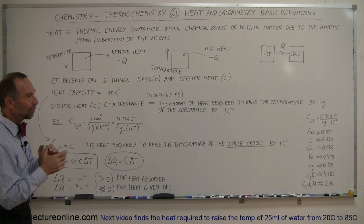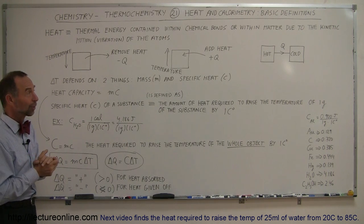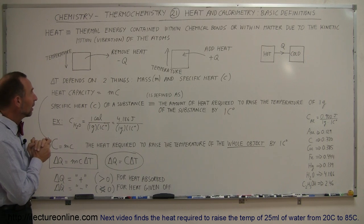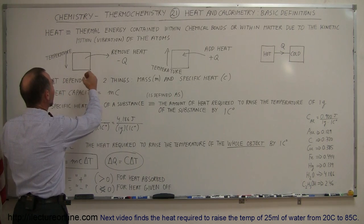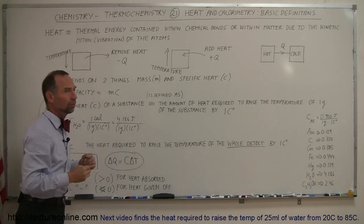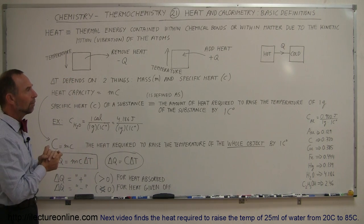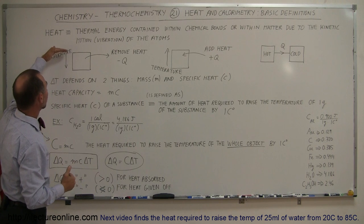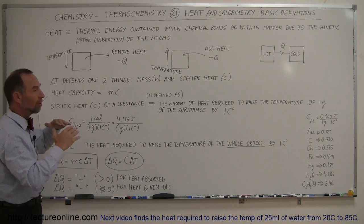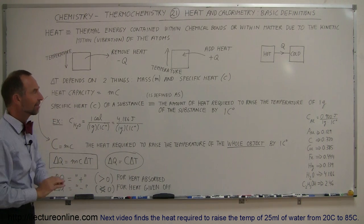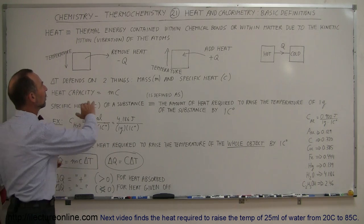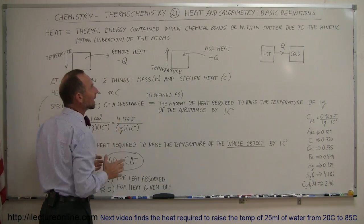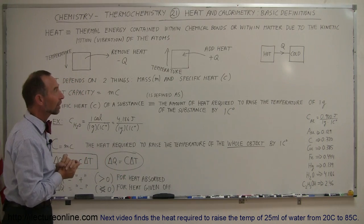It depends on whether it's an endothermic or an exothermic reaction. If you take an object and remove heat from it, you can do that by making the object colder. When you remove heat, the result is the object will become colder, the temperature will become lower. We typically use the letter Q for heat, and when you remove it, it's a negative Q — you're taking heat out of the object.